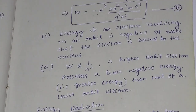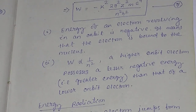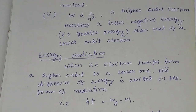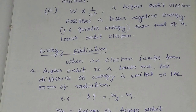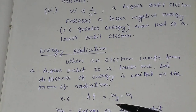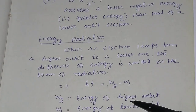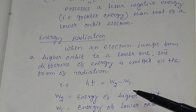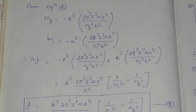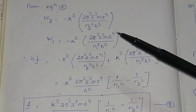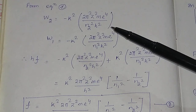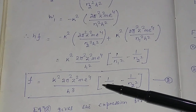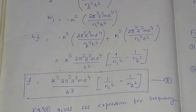After finding the total energy of the electron in the orbit, find the energy of radiation. The energy of radiation equals HF, where F is the frequency of radiation, and HF = W₂ − W₁, the energy of the higher orbit minus the energy of the lower orbit. Substituting those energy values gives the frequency of the electromagnetic radiation.